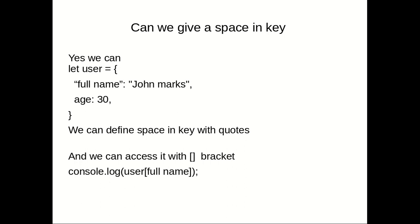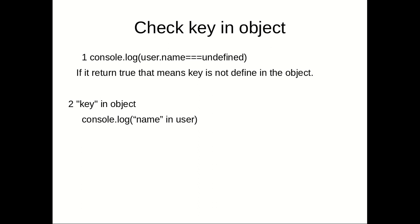We can give the key a value, but how do we access a key that has spaces? As you can see in the last line with `console.log`, we have to use square bracket notation — big brackets — to access it. If you try to access it with dot notation, that is not possible.